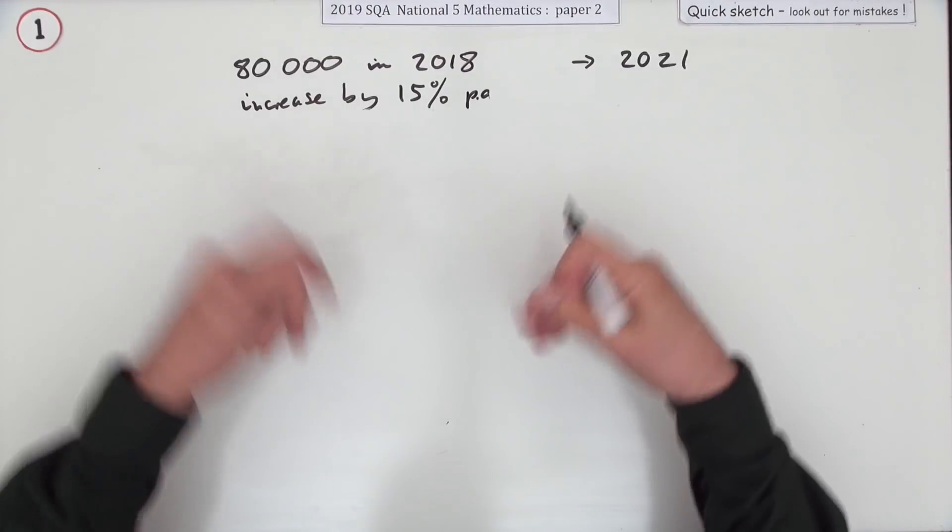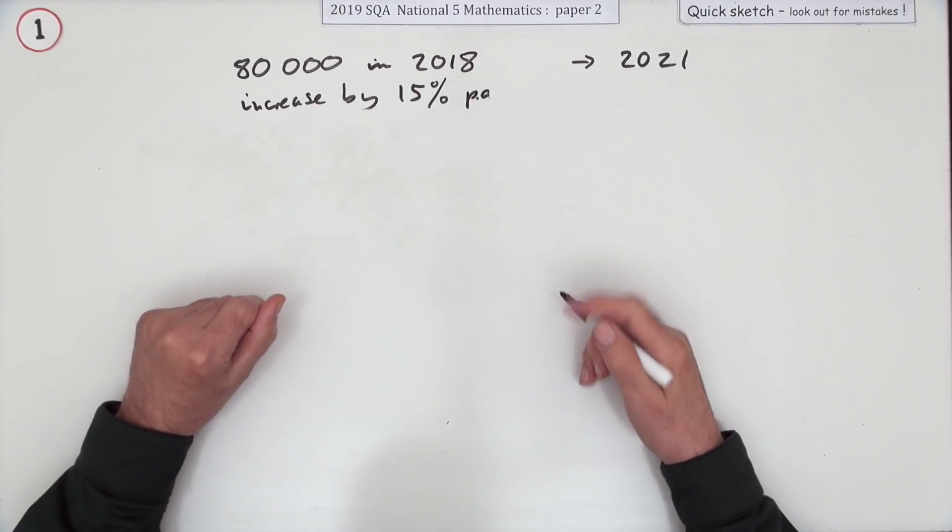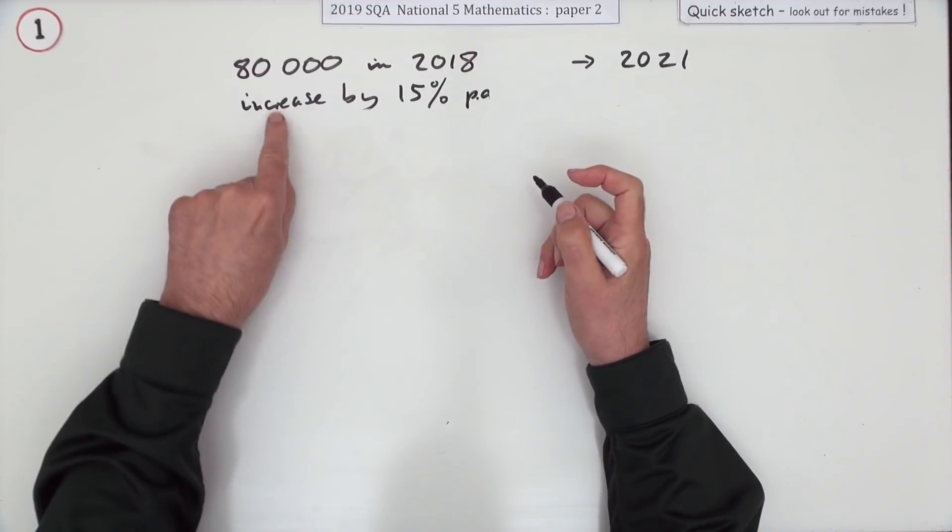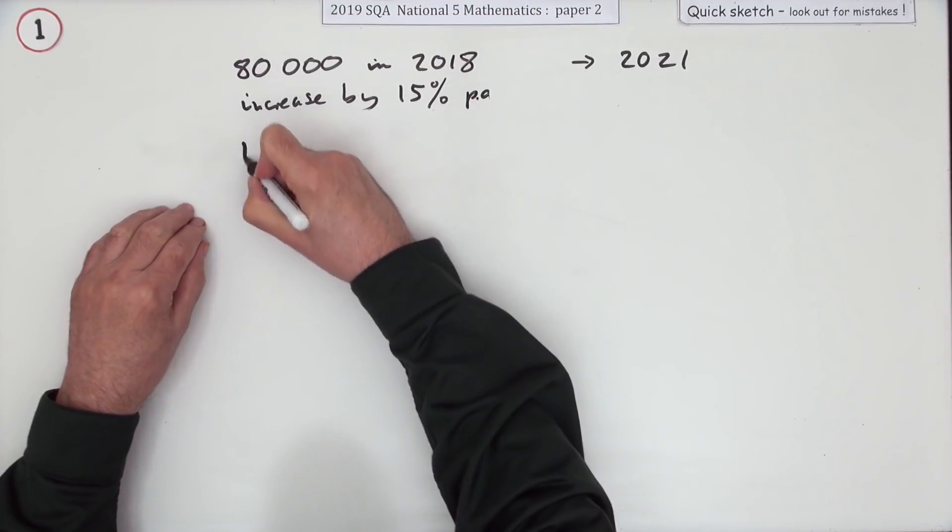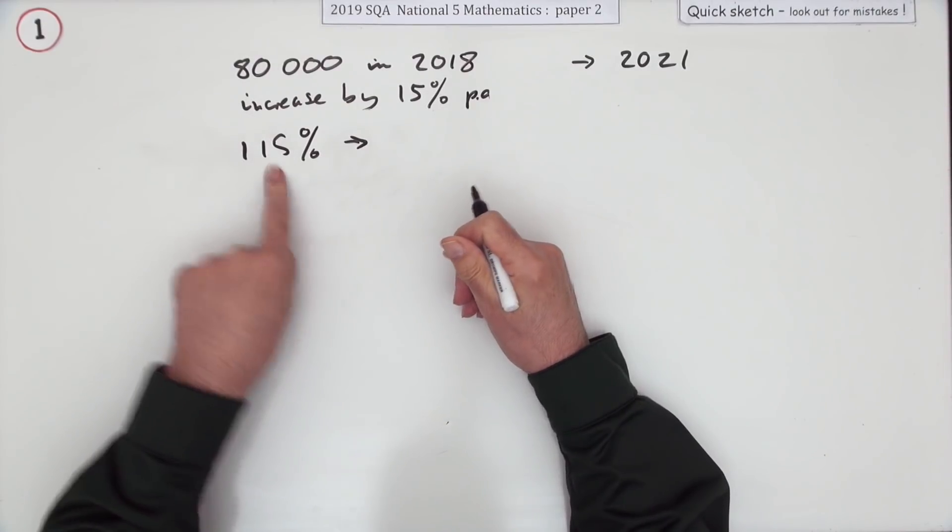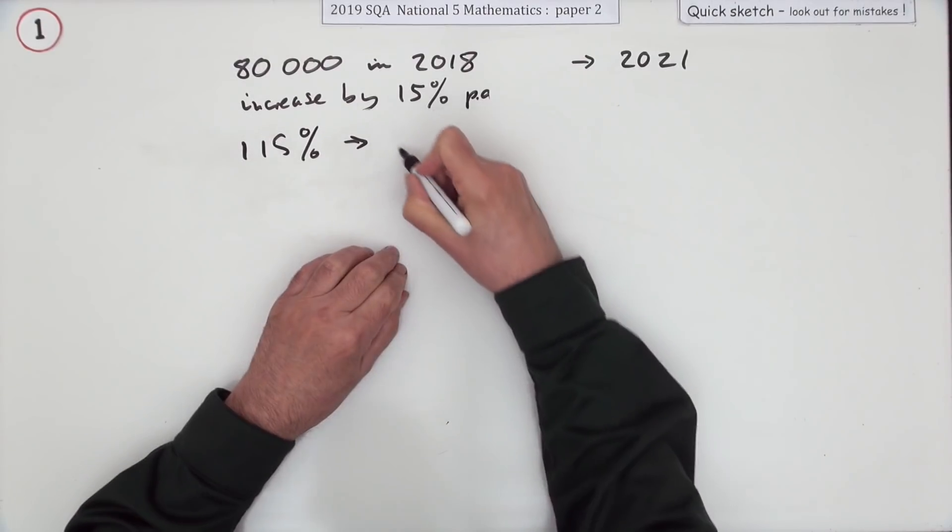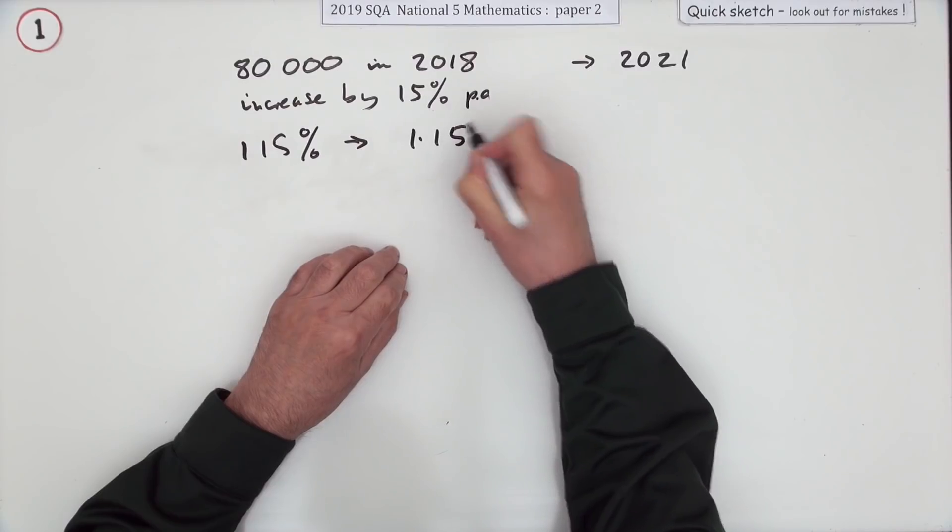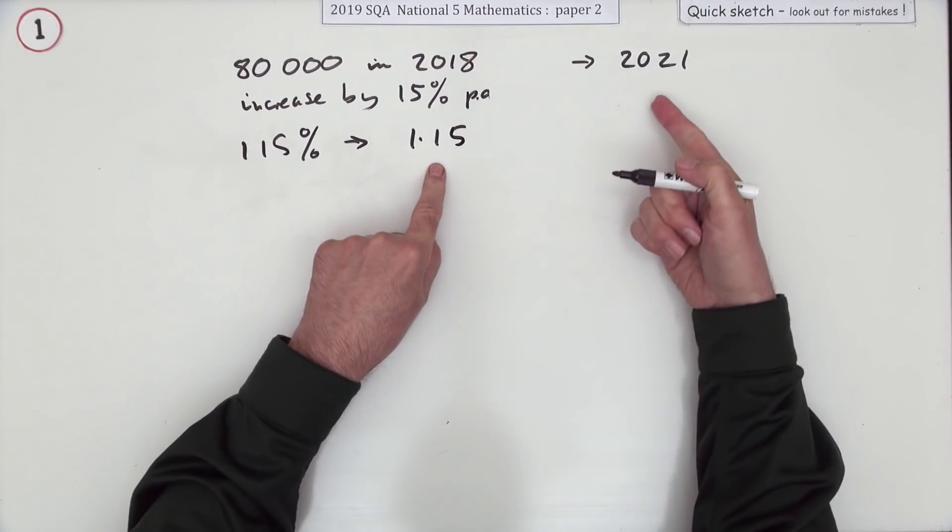No, hopefully you'll see if it's gone up by 15%, you've now got 115%, and use that in a suitable form for multiplication, which is 1.15.